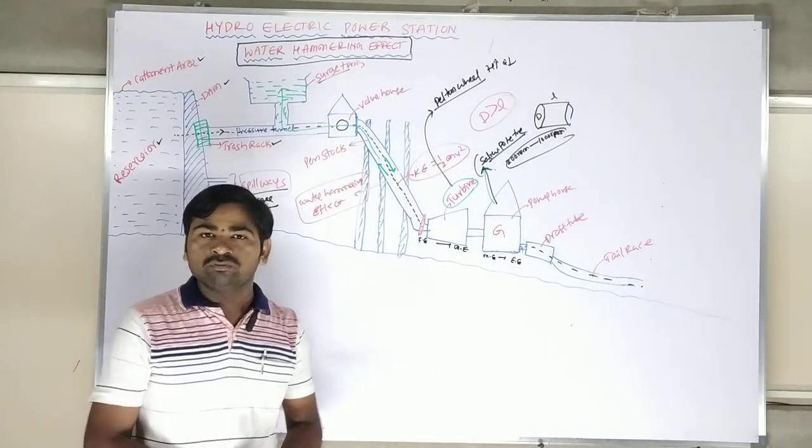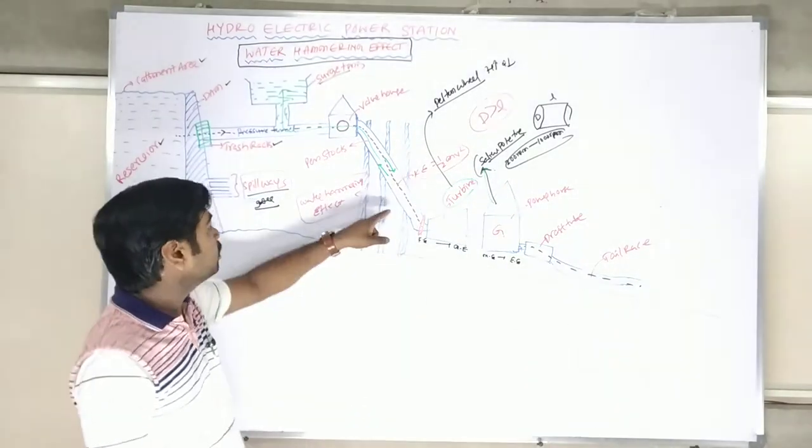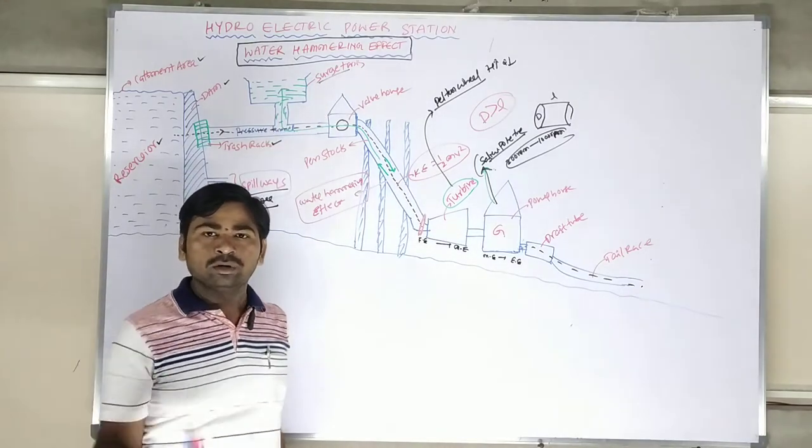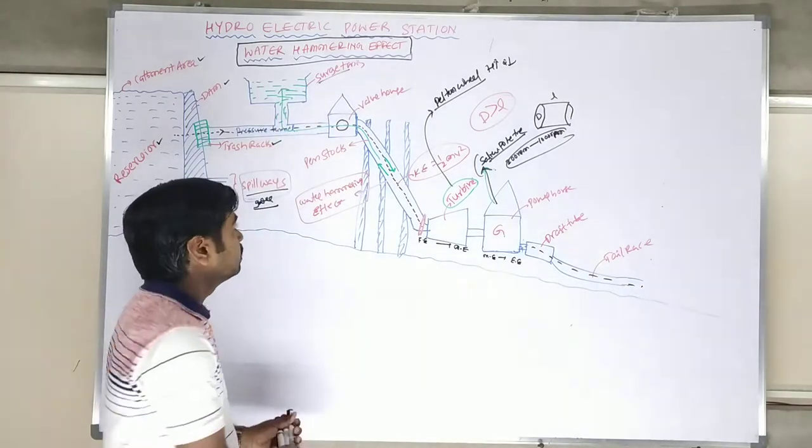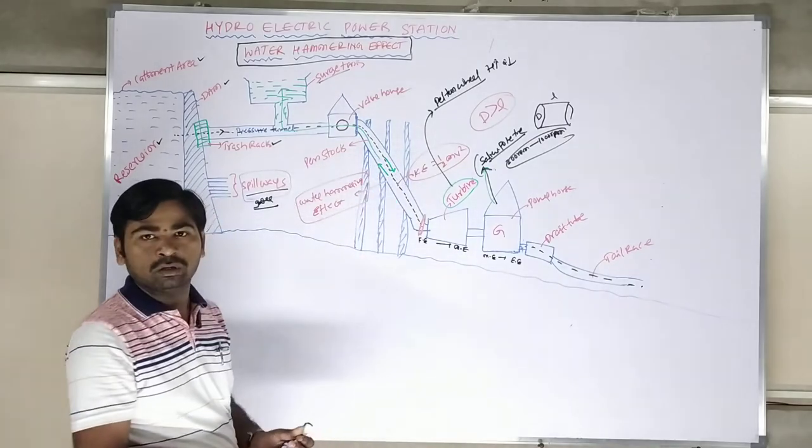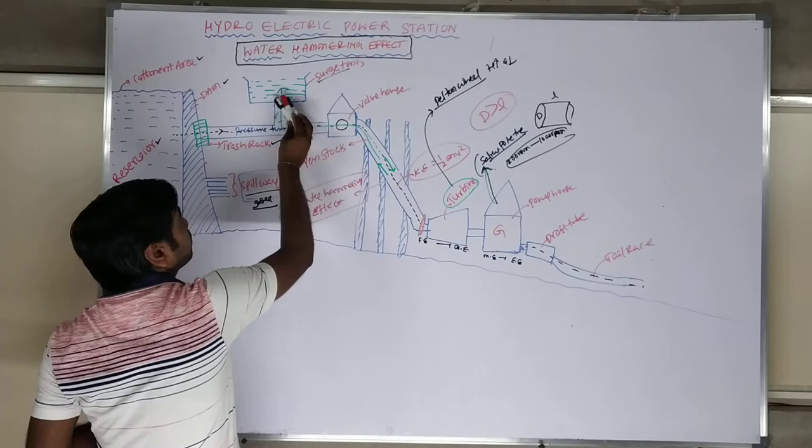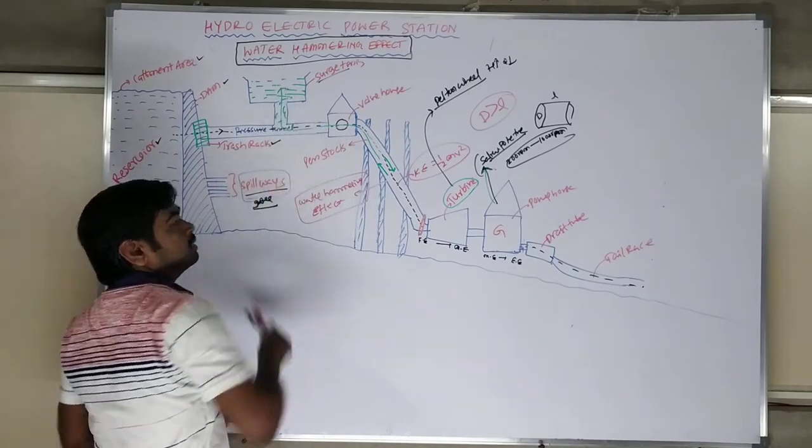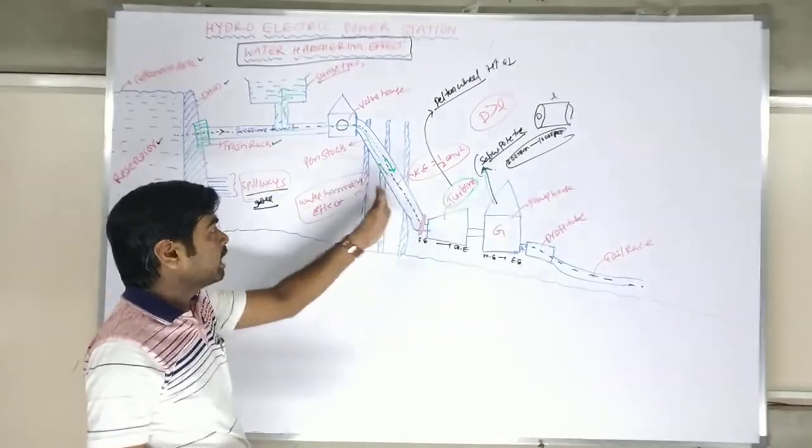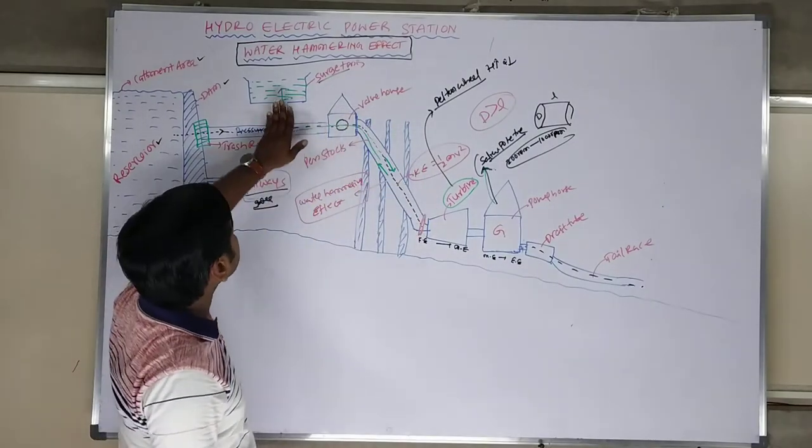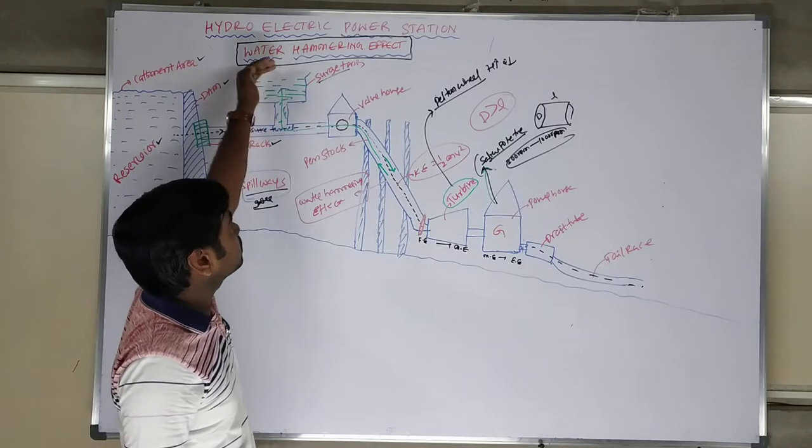To reduce this water hammer effect, we have to use a separate equipment called a surge tank. What the surge tank will do is handle the high pressure or low pressure of water, which will be sent back to the surge tank. Water will keep on increasing in the surge tank. When there is high pressure, that extra high pressure water will again go back and bypass into the surge tank.